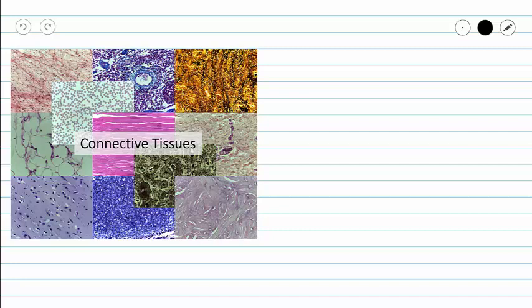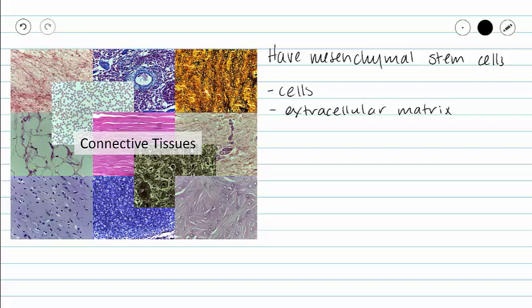All connective tissues have a mesenchymal origin, and so they have mesenchymal stem cells. All of our connective tissues have two major components: cells and extracellular matrix. Our extracellular matrix can be divided into two components itself — first we have ground substance, which is our fluid component, and then we have our extracellular fibers.